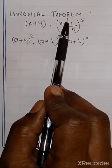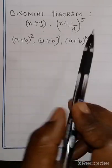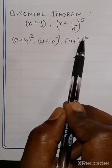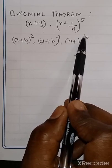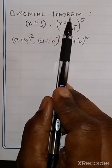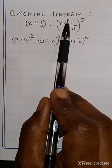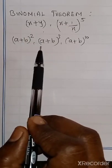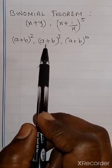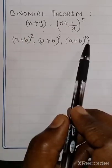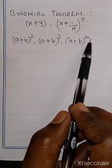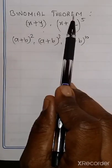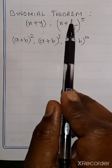When the power is higher, we can use this binomial theorem. For powers 2 and 3, you know direct formulas. But for power 10, you can't use those formulas — for that purpose we use the binomial theorem.